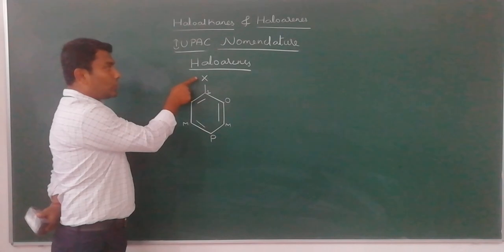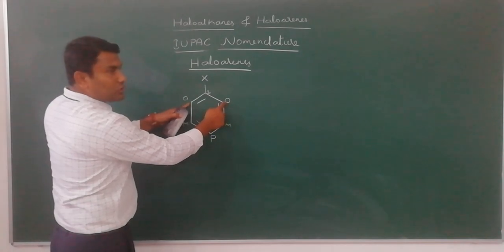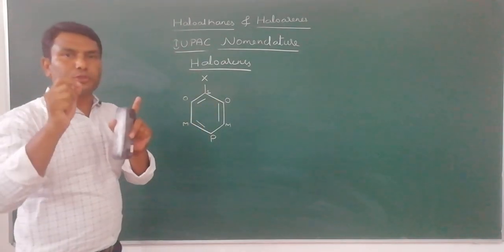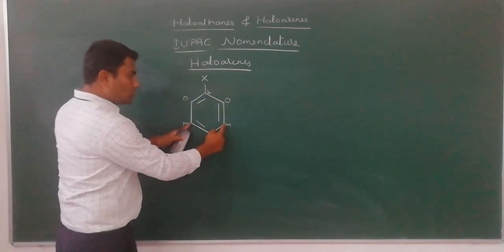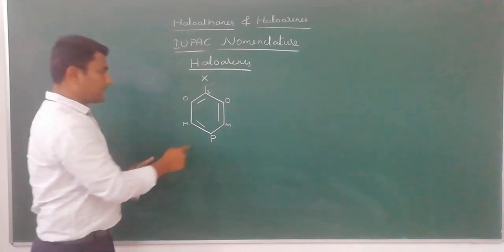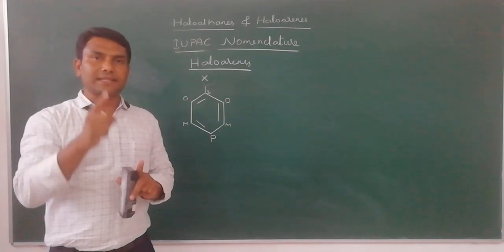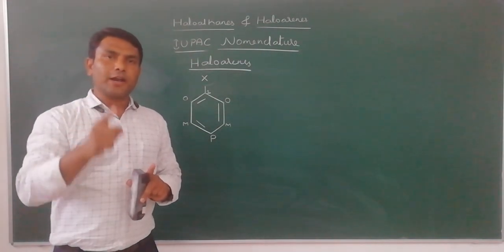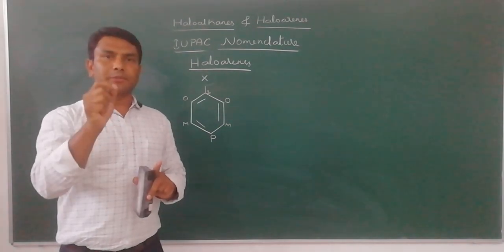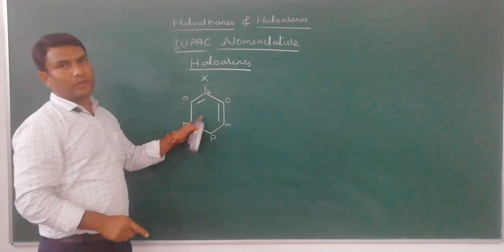When a halogen atom is attached to carbon number 1, the next two adjacent carbon atoms are ortho-positions. These two positions are meta-positions to this halogen atom. And this is the para-position. This is how we assign ortho, meta, and para-positions to a benzene ring when a substituent or functional group is attached.